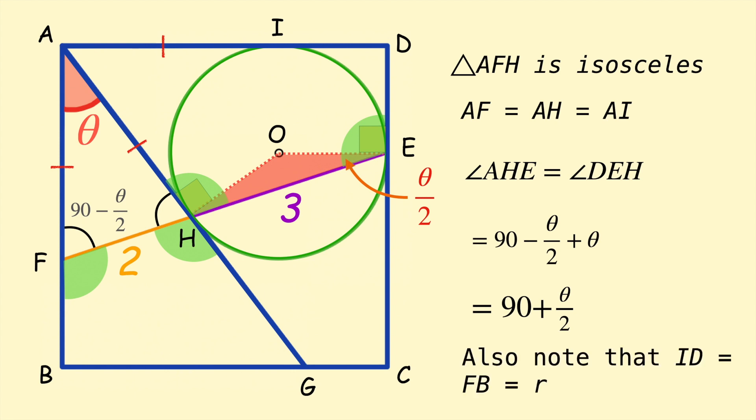Also note that ID is equal to the radius of the circle, which is also equal to FB, because AF and AI are equal, so ID equals FB which equals R, the radius.